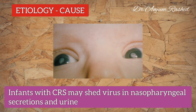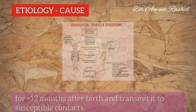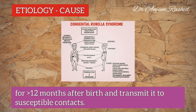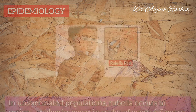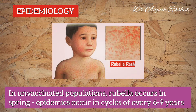Infants with congenital rubella syndrome may also shed the virus in nasopharyngeal secretions and urine for more than 12 months after birth, and so they can transmit it to susceptible contacts.